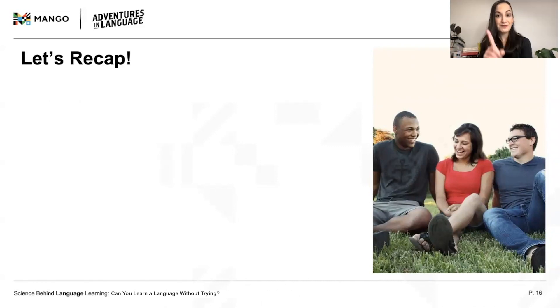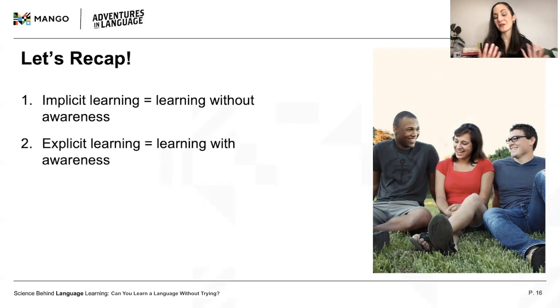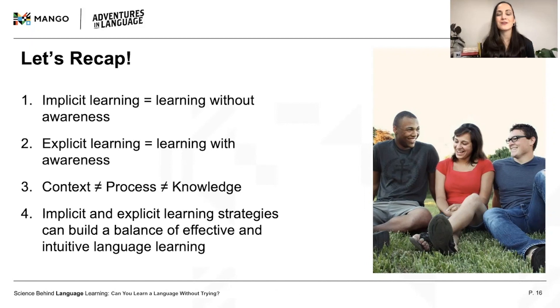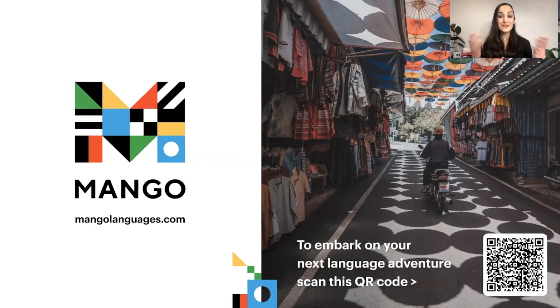To recap: we've defined implicit and explicit learning as learning without and with awareness, respectively. There's a difference between learning context, process, and knowledge — implicit learning conditions don't necessarily lead to implicit learning, which doesn't necessarily lead to implicit knowledge, and the same goes for explicit learning conditions. Implicit learning is important for developing automatic, fluent language skills and developing intuitions, but explicit learning often results in faster learning. Ultimately, it's good to have a balance of both. If you liked this video and want to stay tuned for more about the science behind language learning, make sure you subscribe. Tell us what topics you'd like to learn more about in the comments, and check out the description for free materials on implicit and explicit language learning, including how Mango uses both types in our courses. Thanks for listening!